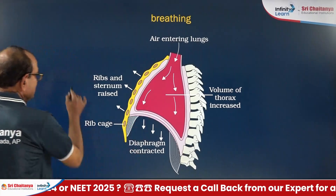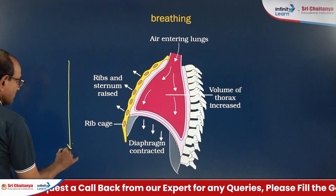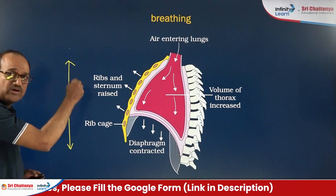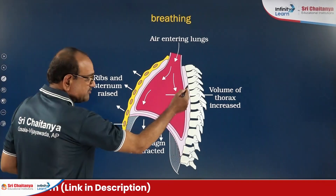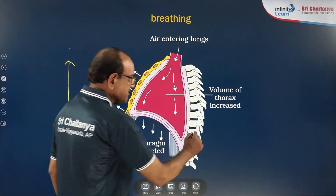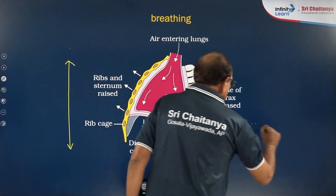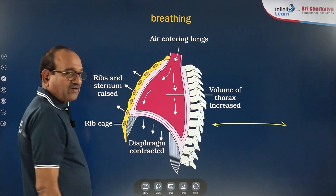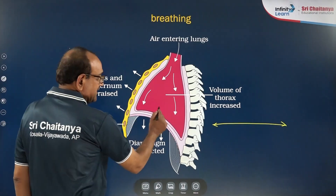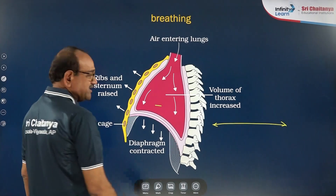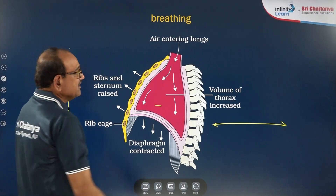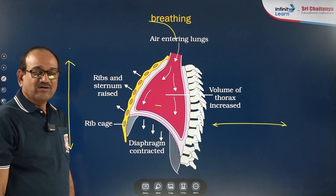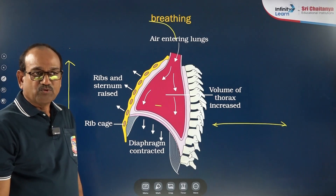When the diaphragm contracts, the thoracic volume increases in the anterior-posterior direction, meaning the vertical direction. When the external intercostal muscles contract, the thoracic volume increases in the dorsal-ventral direction. Overall, the entire thoracic cavity volume increases, thus creating a negative pressure inside the lungs. As a result, atmospheric air enters into the lungs. This process is called inspiration, which is an active process.